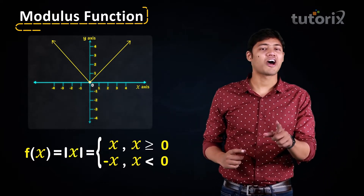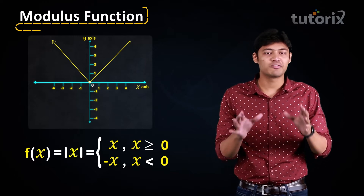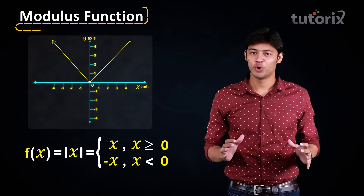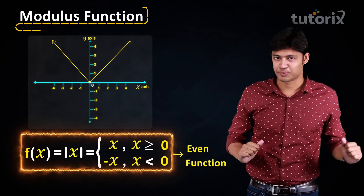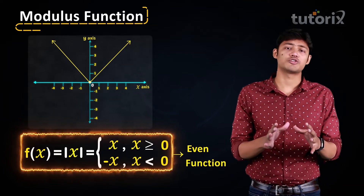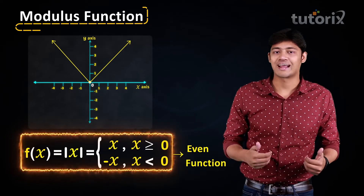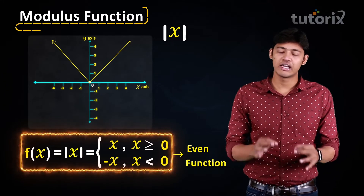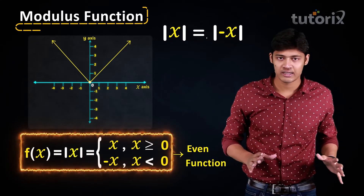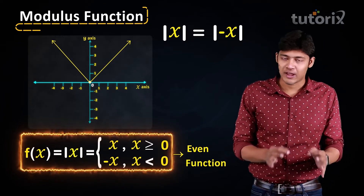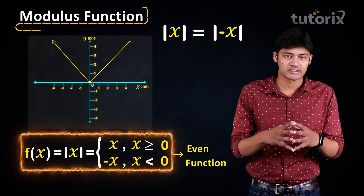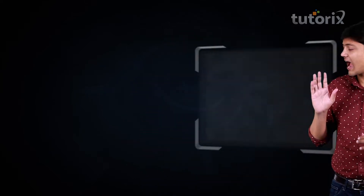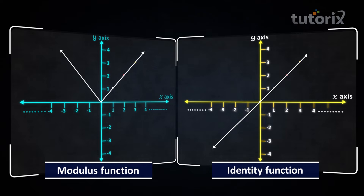Since the graph of the modulus function is symmetrical with respect to the y-axis, and we know that graphs of even functions are symmetrical about the y-axis, we can conclude that the modulus function is an even function. This also follows from its definition, since modulus of x equals modulus of minus x, and if f(x) equals f(minus x), then f(x) is an even function.